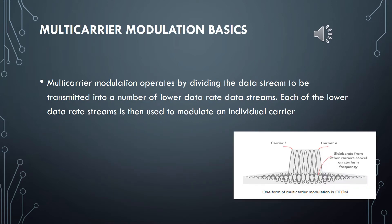So let's see now the basics of the multi-carrier modulation. Multi-carrier modulation operates by dividing the data stream to be transmitted into a number of lower data rate streams. Each of the lower data rate streams is then used to modulate an individual carrier. When the overall transmission is received, the receiver has to reassemble the overall data stream from those received on the individual carriers. It's possible to use a variety of different techniques for multi-carrier transmissions, and each form of MCM has its own advantages and can be used in different applications.